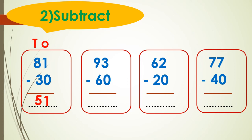The next question: we have 93 minus 60. First I'll write ones and tens. Start subtracting by ones: 3 minus 0 equals 3, so I write 3 in the ones place. Then look at the tens: 9 minus 6 equals 3. I write 3 in the tens place. So 93 minus 60 equals 33.